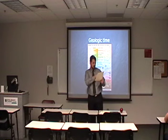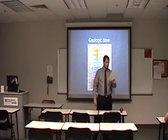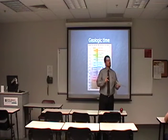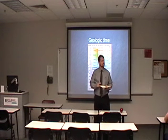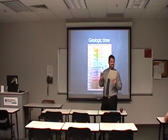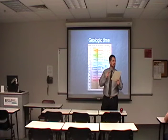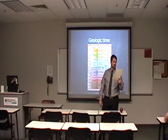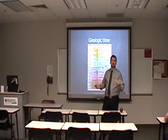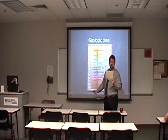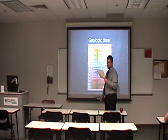5,000 years divided by 78 years per lifetime is only 65 modern lifetimes put end to end. That gives you an idea of how big the scales we're dealing with are.